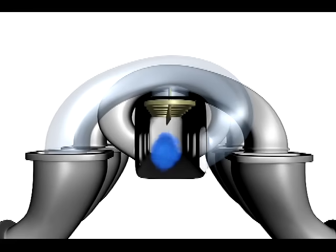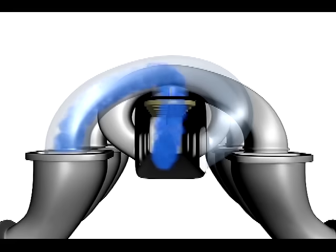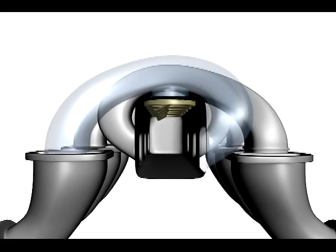At high engine speeds, ACIS directs the air through a short intake runner in order to generate more horsepower. Think of this as taking quick short breaths while running.